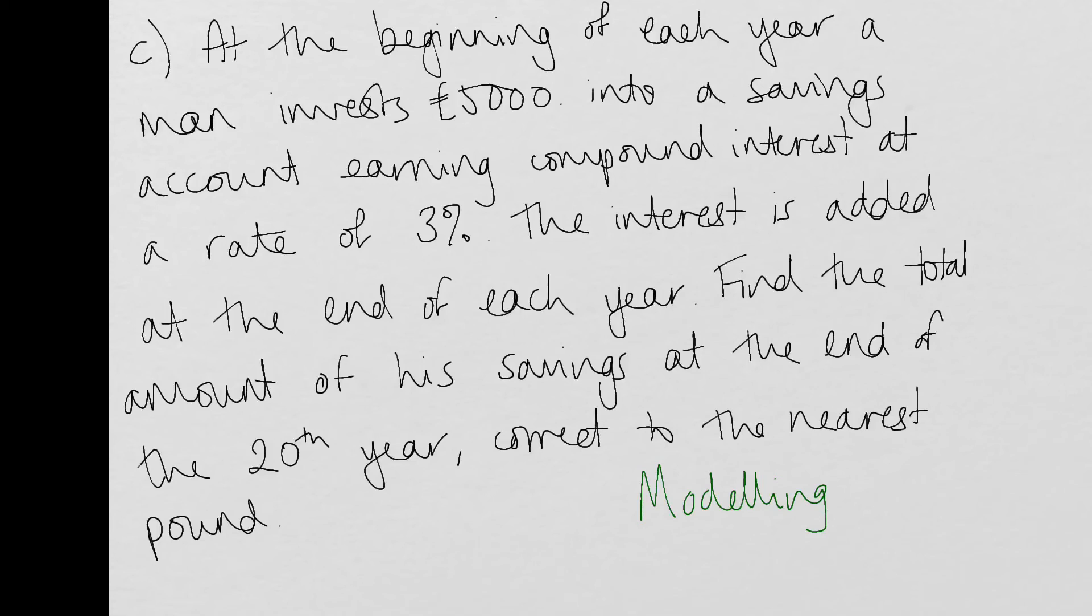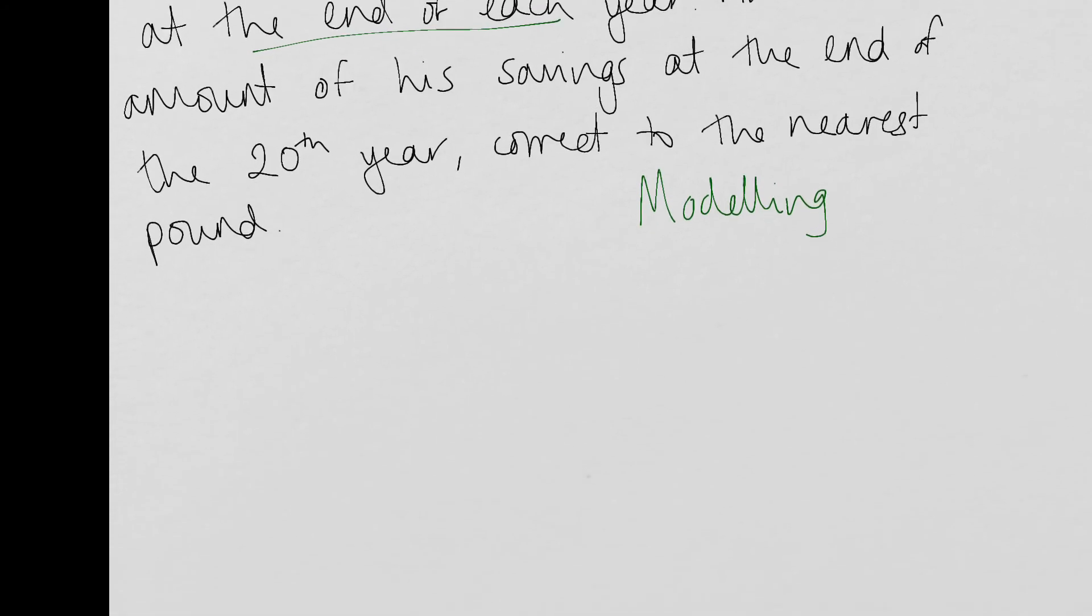So, you know, always trying to show you where this math is useful. So at the beginning of each year, Iman invests £5,000. So that is every year, clearly quite rich, to put £5,000 in at the start of every year. He's getting compound interest at a rate of 3%. The interest is added at the end of each year. Find the total amount in his savings at the end of the 20th year. Correct to the nearest pound. OK, so if you do go to the final part of chapter three in your textbooks, you will find a whole series of questions around modelling using both of the series. But we're just going to sort of dip in and have a look at this one here.